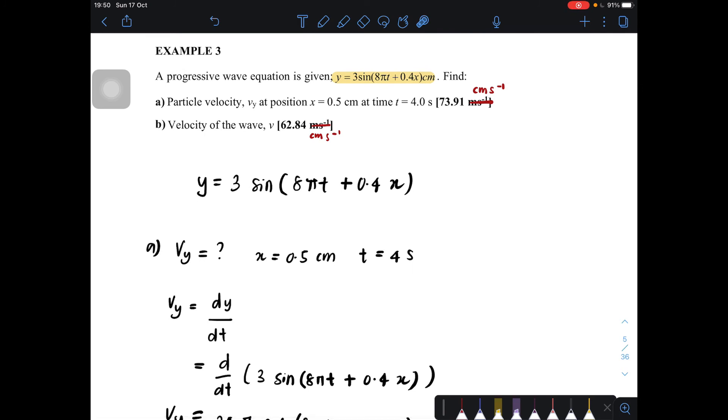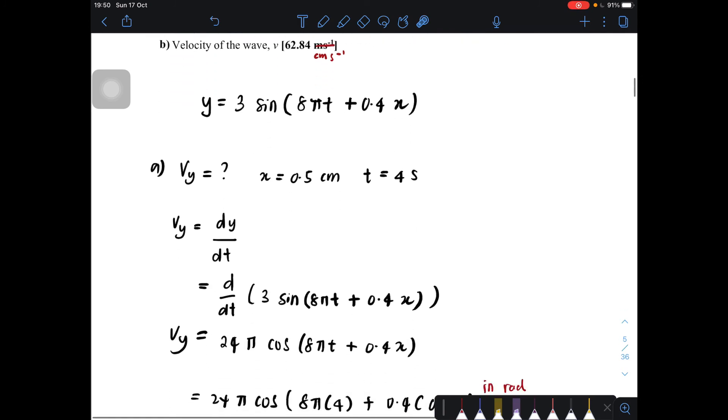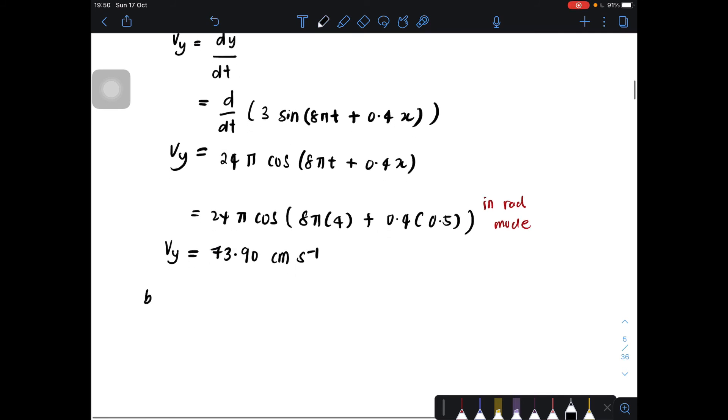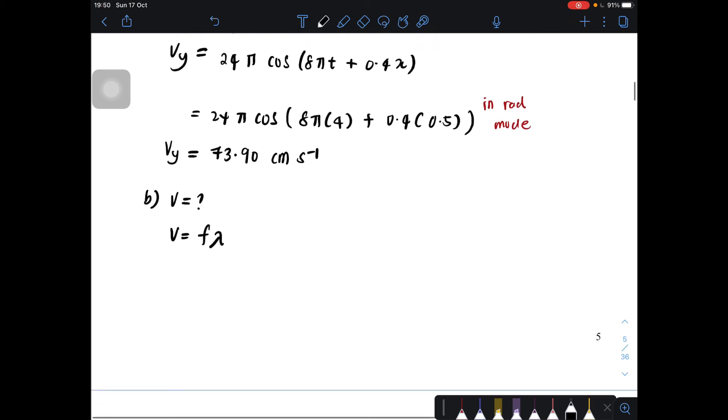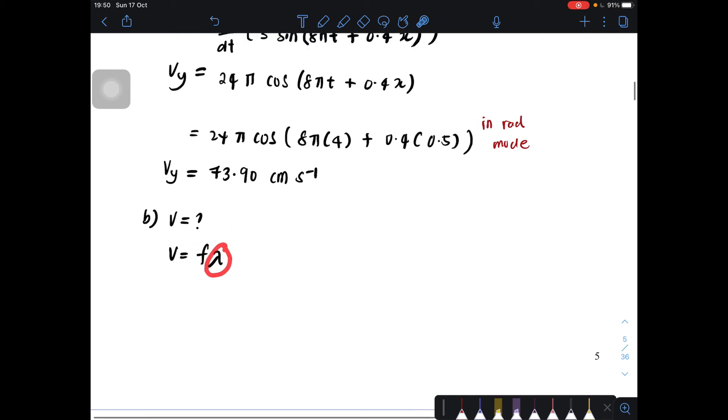We want to find what is the value for velocity, which is value for v. So question b, we want v. And then formula is f lambda. So f lambda means here, we need to find what is the value for f and what is the value for lambda.